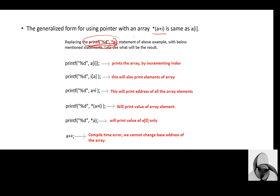The generalized form for using a pointer with an array: `*(a + i)` is the same as `a[i]`. Writing `printf("%d", a[i])` prints the array by incrementing the index. Writing `*(a + i)` prints the element value, and `(a + i)` prints the address of each array element. `*a` prints the value of a[0] only. Writing `a++` causes a compile-time error — we cannot change the base address of an array.